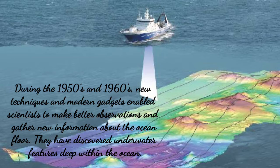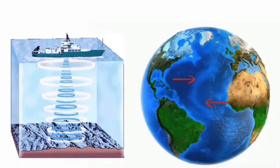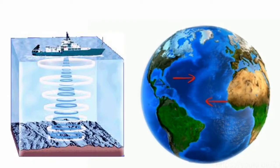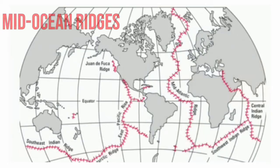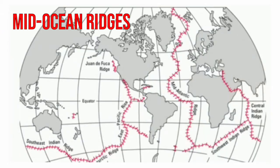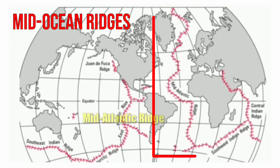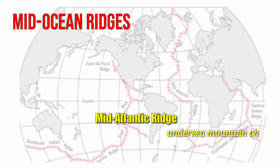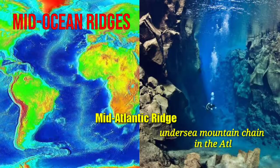They discovered underwater features deep within the ocean. Scientists found a system of ridges or mountains in the seafloor similar to those found on the continents. These are called mid-ocean ridges. One of these is the famous Mid-Atlantic Ridge, an undersea mountain chain in the Atlantic Ocean.